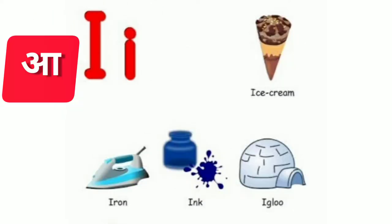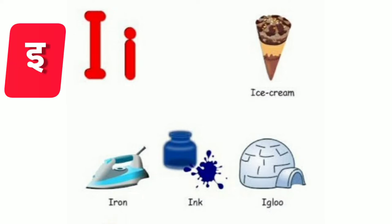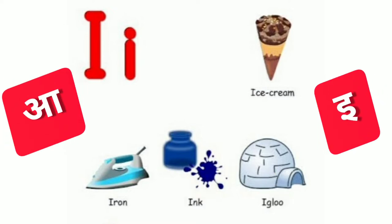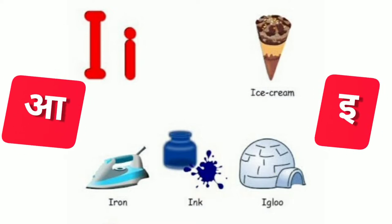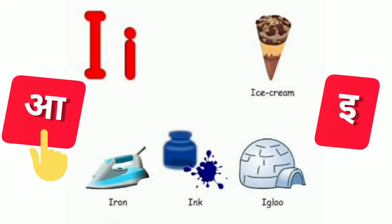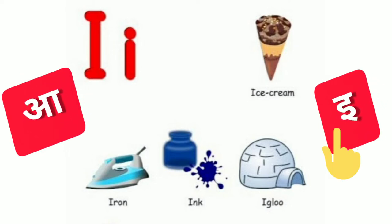Next word is I. I sound is A. Ice cream. Iron. Second sound of I is E. Ink. Igloo. So kids, there are two sounds of I — it's A and E.